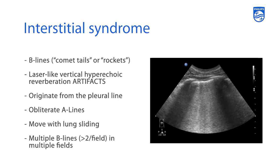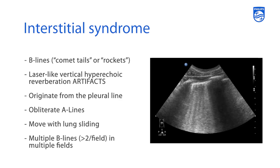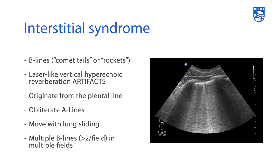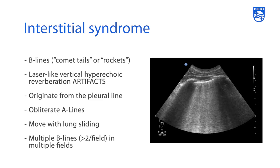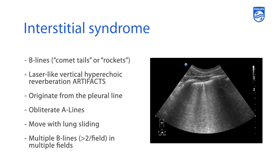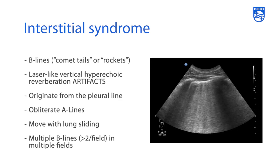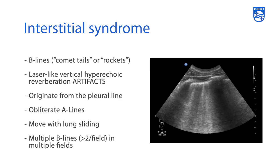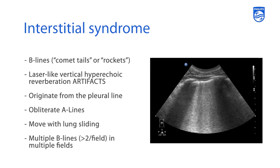They obliterate those A-lines that we talked about on normal lung visualization. They tend to move with the lung as it slides, and they really look like flashlights or lasers of light coming from the pleural line.